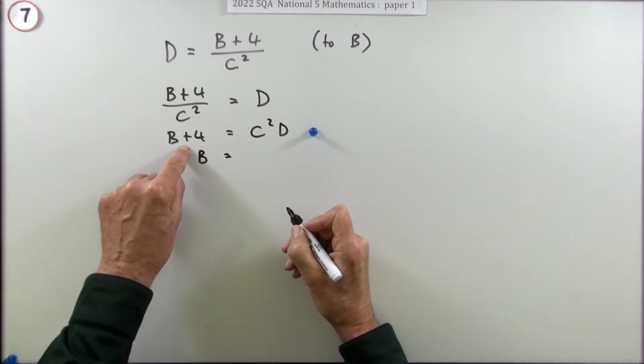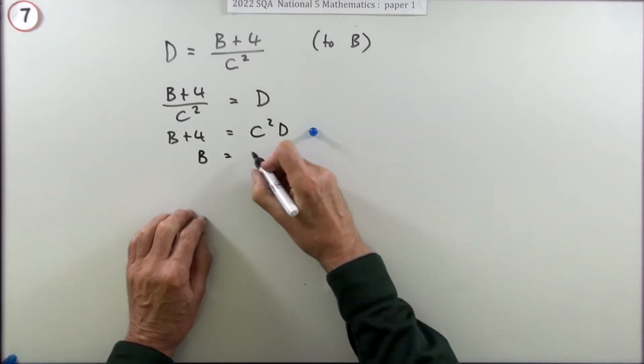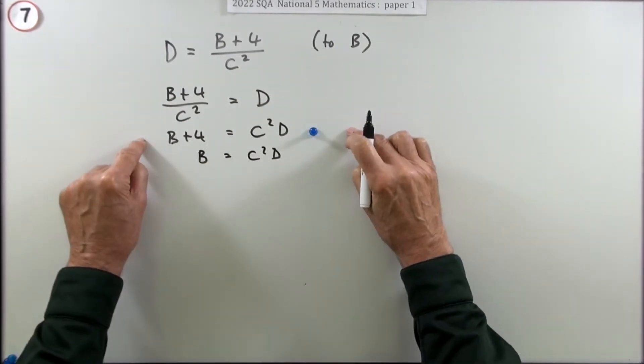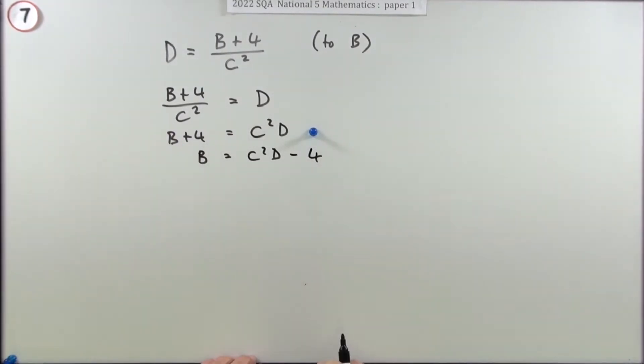Now you've just got that four to get rid of. The opposite of add four is subtract four, so what you're really doing is subtracting four from both sides. But the net result is that four disappears and you see a minus four over here, and that's the final mark.